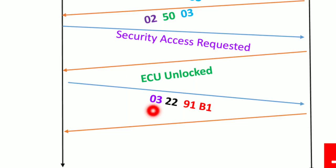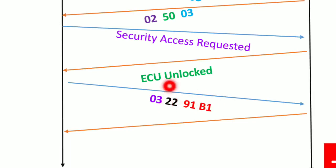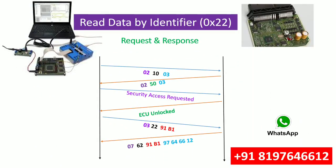For the read request: 0x03 is the PCI length, 0x22 is the service ID, and we specify DID 0x91B1 where we know the ECU serial number is stored. Regarding how to read the ECU serial number using CAPL: if you are a beginner, you can write a CAPL program that includes this DID. You follow the same procedure — go into Extended Session, unlock the ECU, then send these bytes — and you will receive the response.